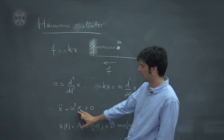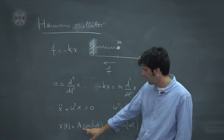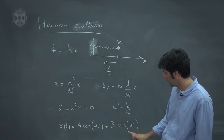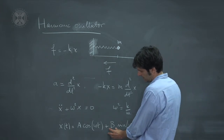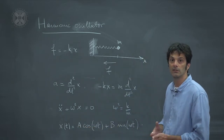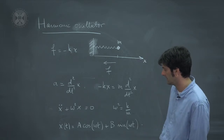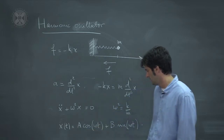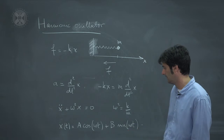The solution to this differential equation has been known for a very long time — it is simply a linear combination of sines and cosines. The most general solution is x(t) = a·cos(ωt) + b·sin(ωt). The actual values of a and b depend on the initial conditions of your system: if you know the position at time 0 you can find a, and if you know the velocity at time 0 you can find b.